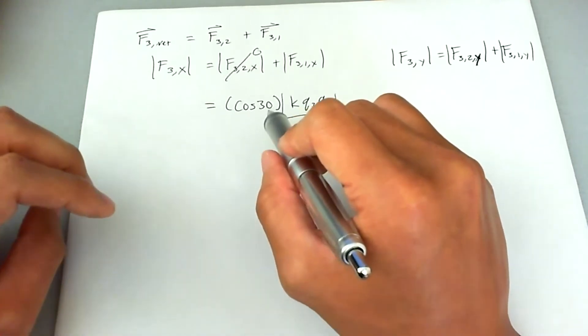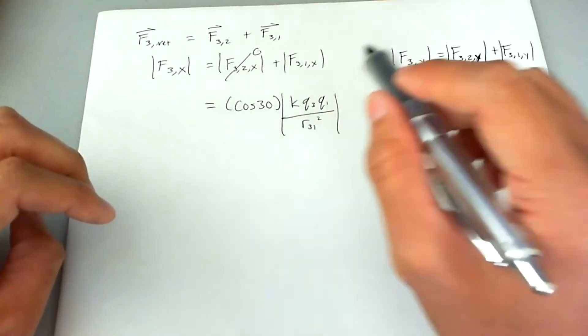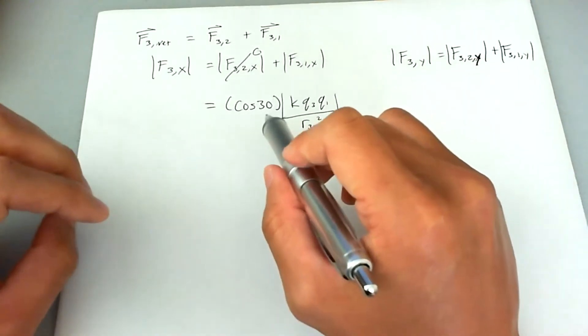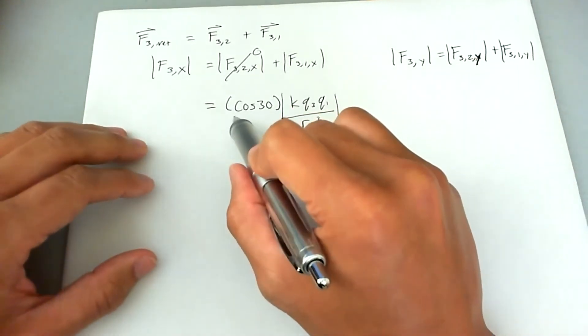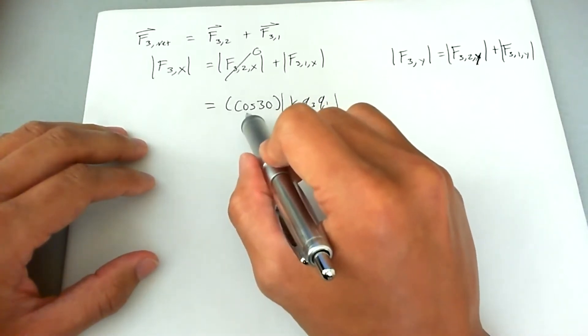The 30 degree angle that makes up the triangle that's shown in that problem is the leg that we're looking at is adjacent to that 30 degrees. So a cosine is being used.